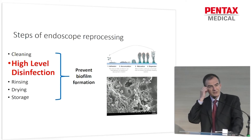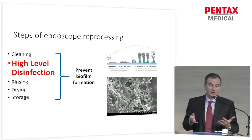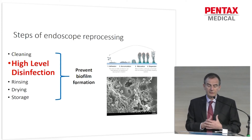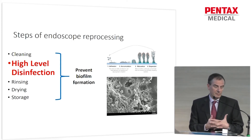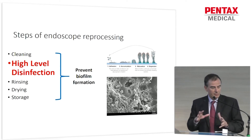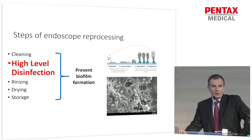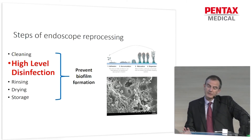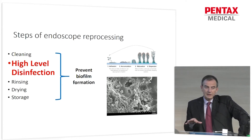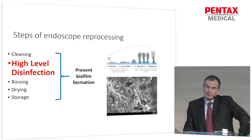These different steps of endoscope reprocessing — namely cleaning, high-level disinfection, rinsing, drying, and storage — all aim at preventing the formation of biofilm. Biofilm is a very particular matter in which microorganisms are deeply embedded in an extracellular matrix essentially made of polysaccharides, and which is very comfortable settling inside the irregular surfaces of internal parts of endoscopes.